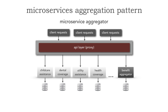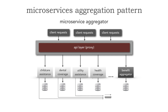What this is going to do is store that aggregated information. How it gets that information is that we have a queue and something called a data pump. So all the child care, dental, utility, health — all 140 of them — every time a benefit is granted, denied, or removed...